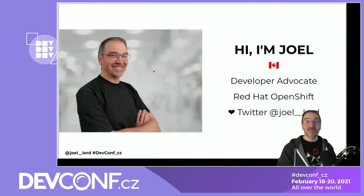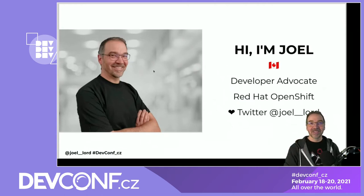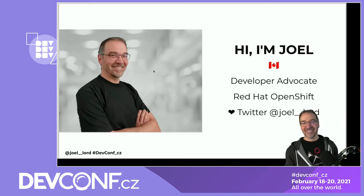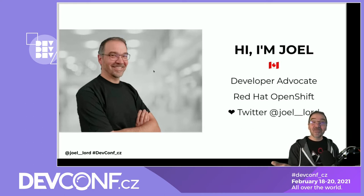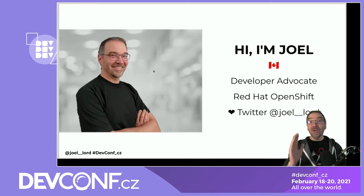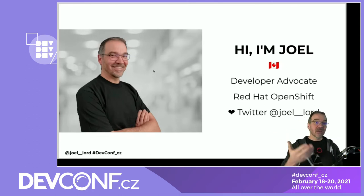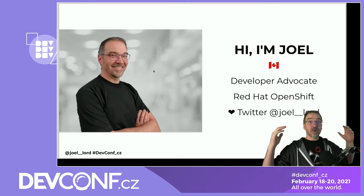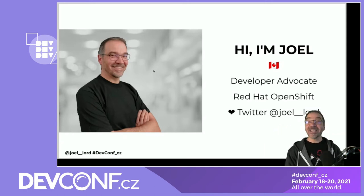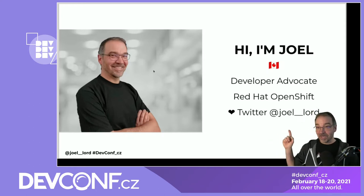My name is Joel. I am based in Ottawa, Canada. I'm French-Canadian. I work as a developer advocate for the Red Hat OpenShift platform. If you ever want to get in touch with me and have any questions about Tekton, CI/CD, OpenShift, Kubernetes, or just about Canada, the easiest way is always to reach me on Twitter.